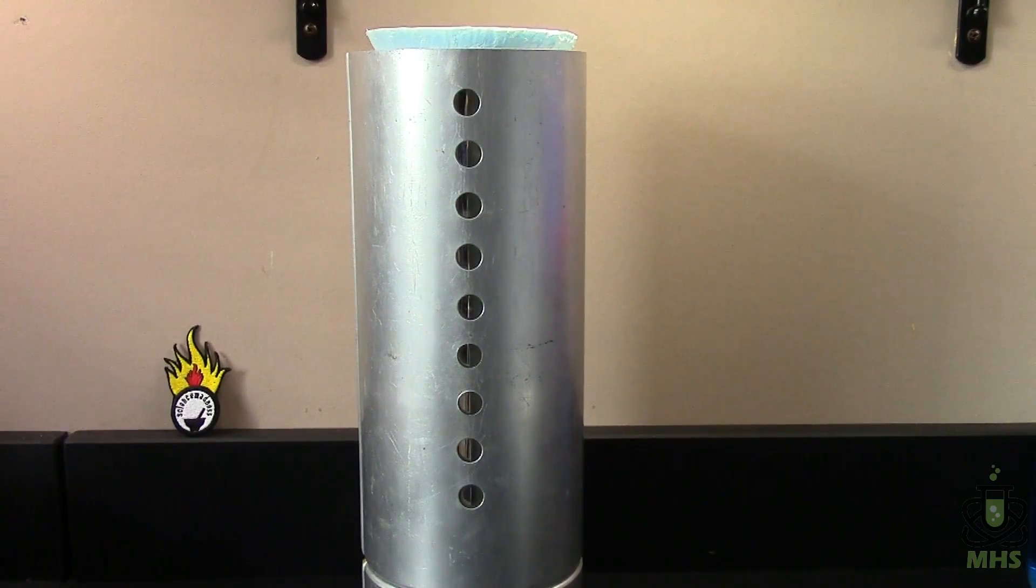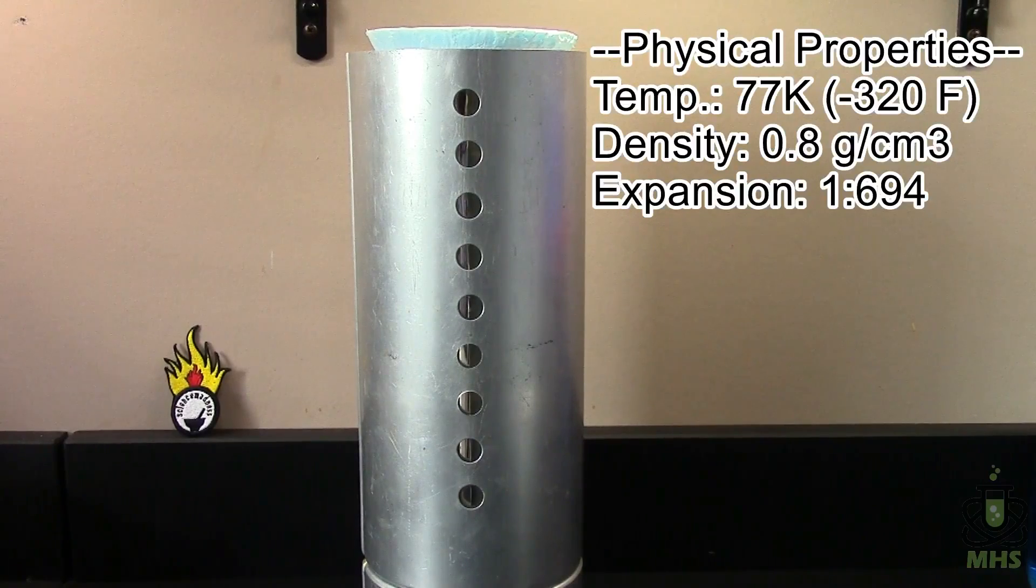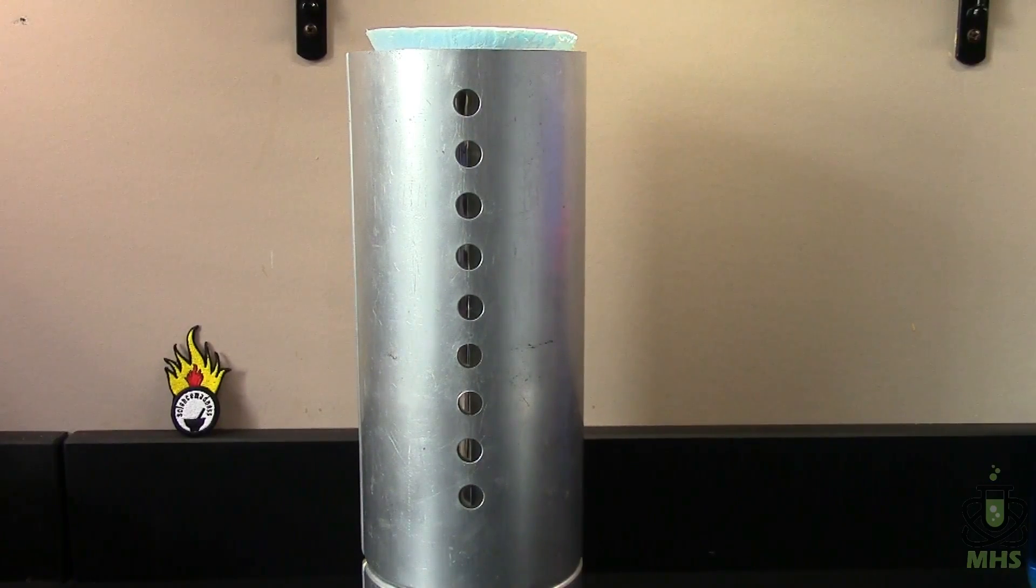And finally, it's got a huge expansion ratio. The liquid, when it boils into a gas, expands tremendously. In fact, one liter of liquid nitrogen, if it all boils off, will expand into 694 liters of nitrogen gas. So you can imagine if that's in a sealed container, that could create insane pressures.